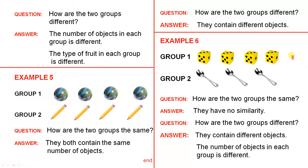And the last example: Group 1 has 4 dice, Group 2 has 3 spoons. How are the two groups the same? They have no similarity — there's nothing similar about them. How are the two groups different? They contain different objects, and the number of objects in each group is different.